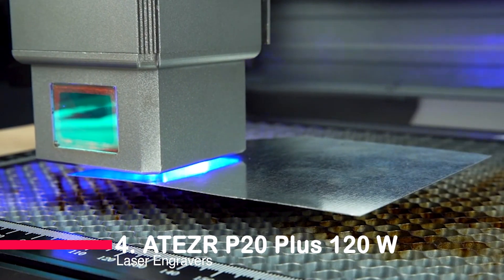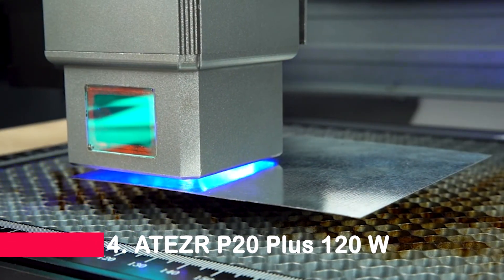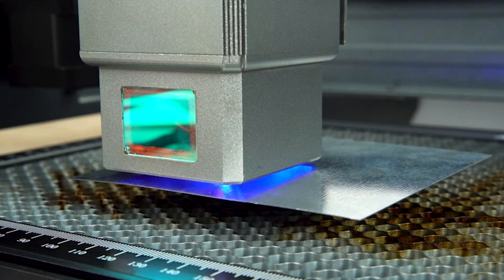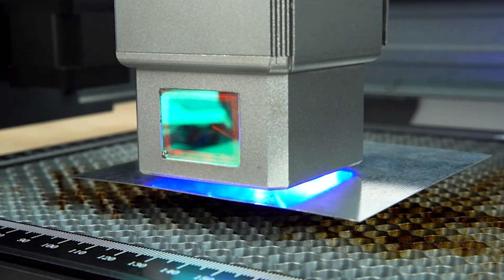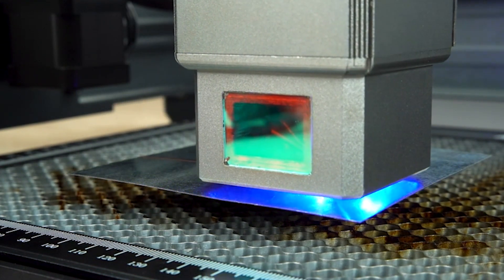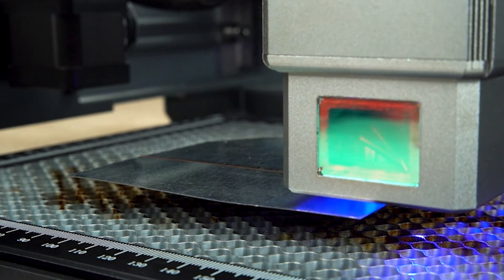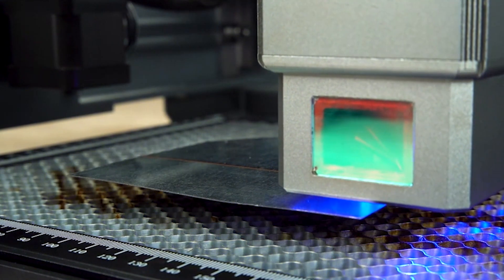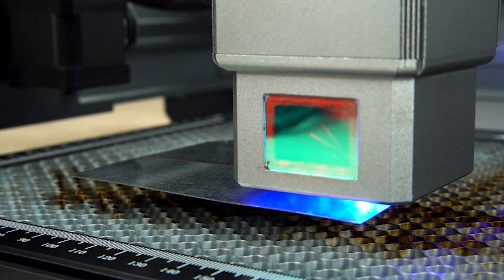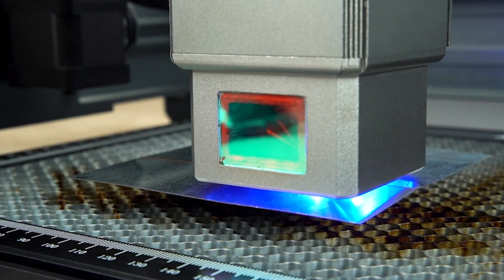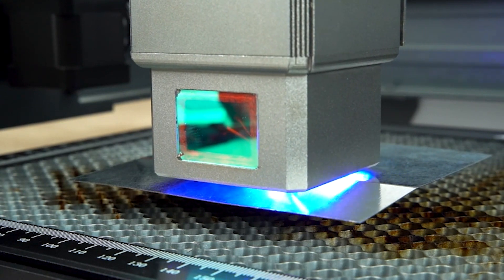Number four, Atesra P20 Plus 120 Watt Laser Engravers. Meet the Atesra P20 Plus 120 Watt Laser Engraver with KA Air Assist, the true powerhouse in laser cutting and engraving. With a robust 120 watts machine power and precision-focused 20 to 24 watts laser power, it can handle tasks from cutting 15-millimeter wood to tackling 0.05-millimeter steel sheets.